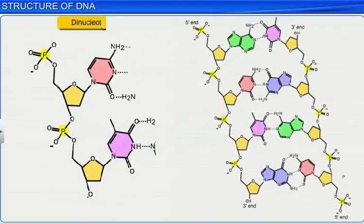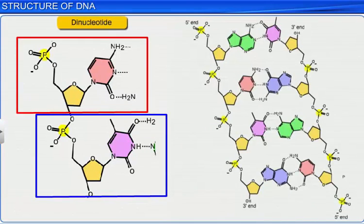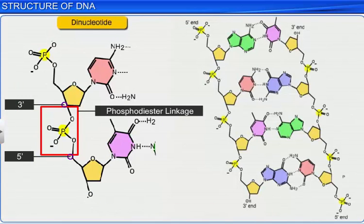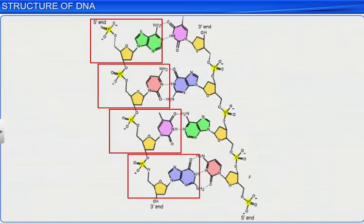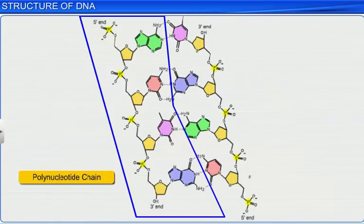Also, a dinucleotide is formed when two nucleotides are linked through a 3'-5' phosphodiester linkage, and several such nucleotides can join similarly to form a polynucleotide chain.